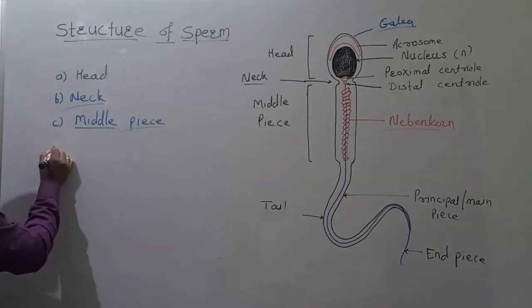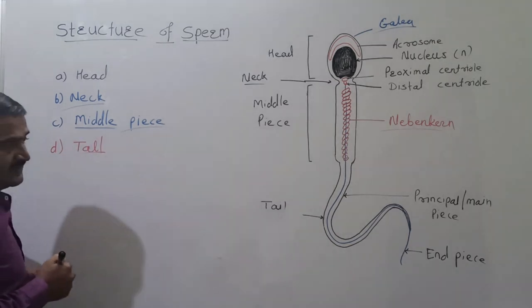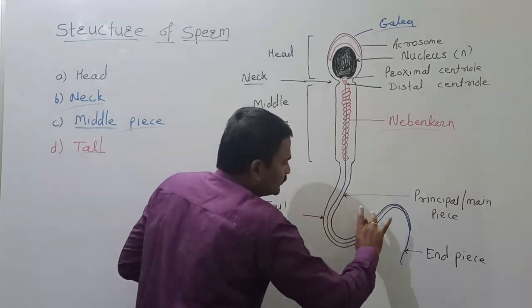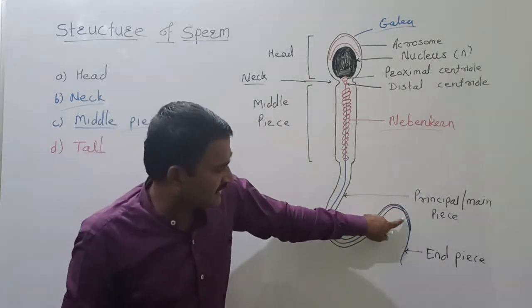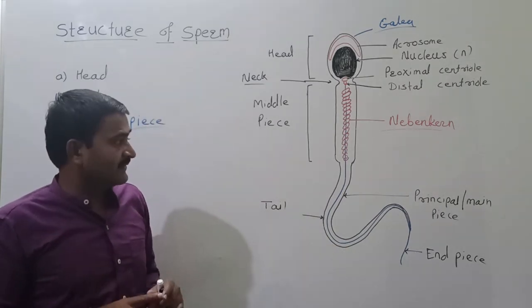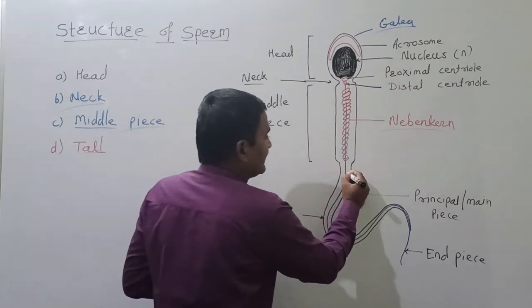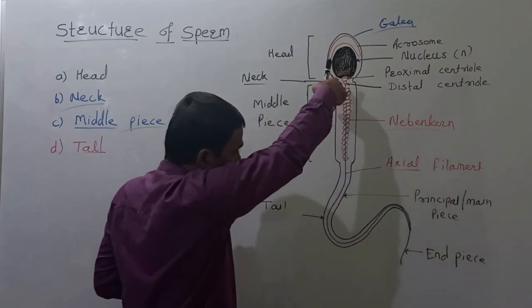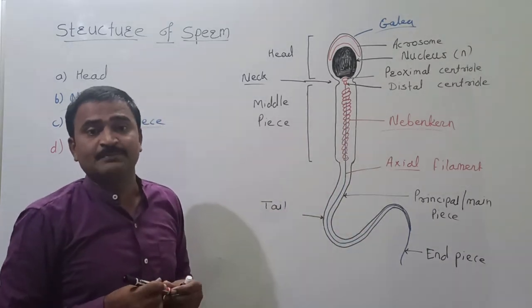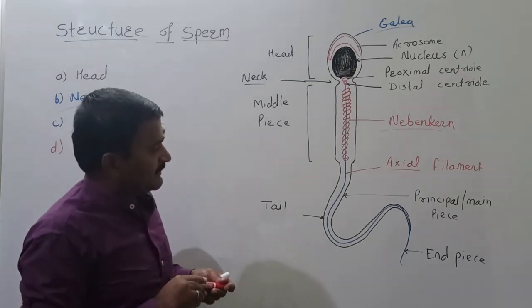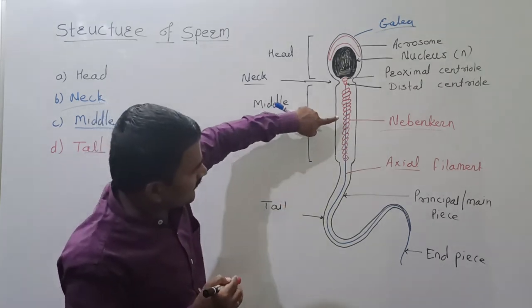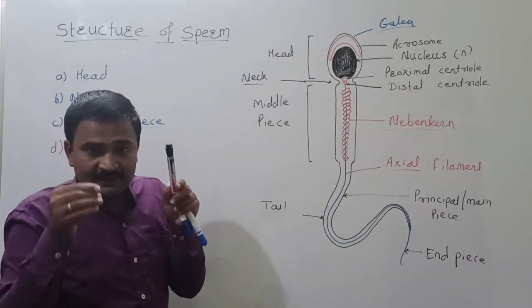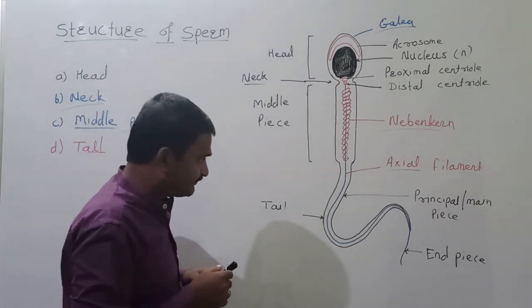The last portion of the sperm structure is called the tail. The tail is a long, slender, and tapering portion. The axial filament is present at the center of the tail, and this axial filament is covered by a very thin film of cytoplasm, which is then covered by a plasma membrane.